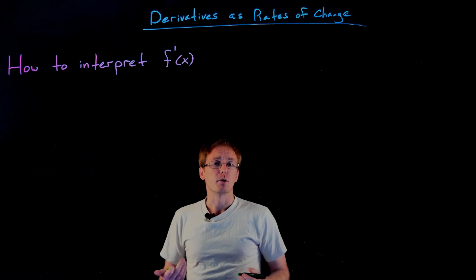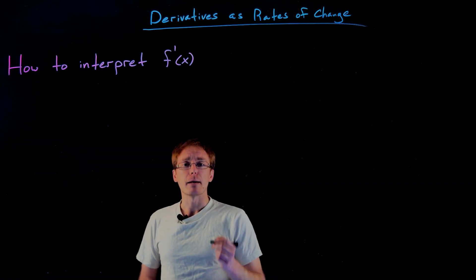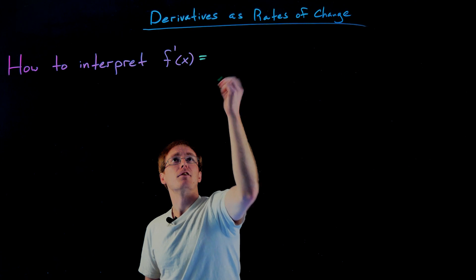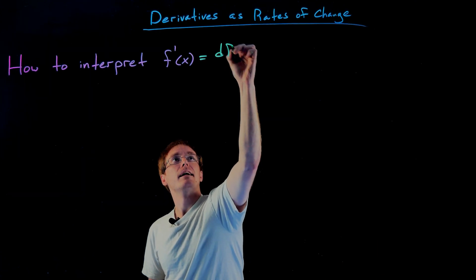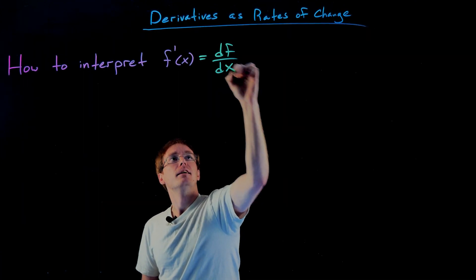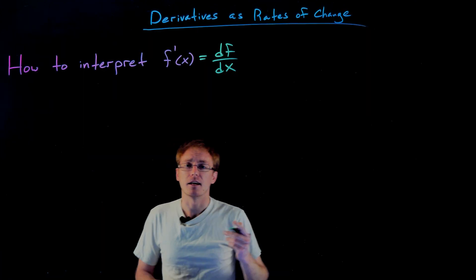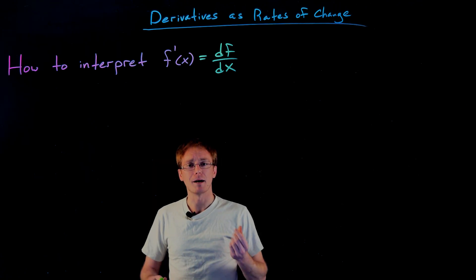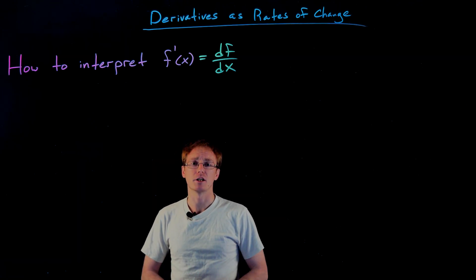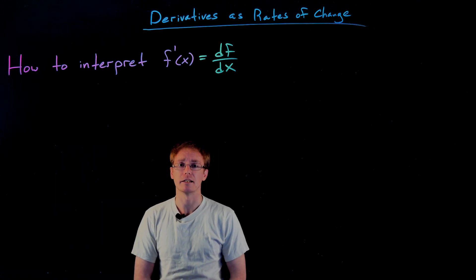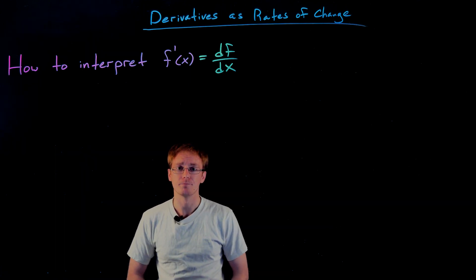We can always express f prime of x using Leibniz notation instead — writing it as df/dx. I like to use this Leibniz notation because it really reminds me that this derivative is a rate of change, and it helps us find the units of that rate of change as well.